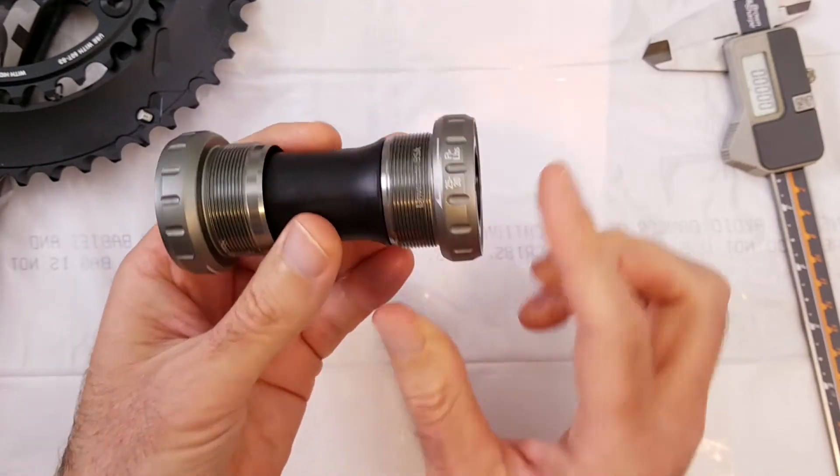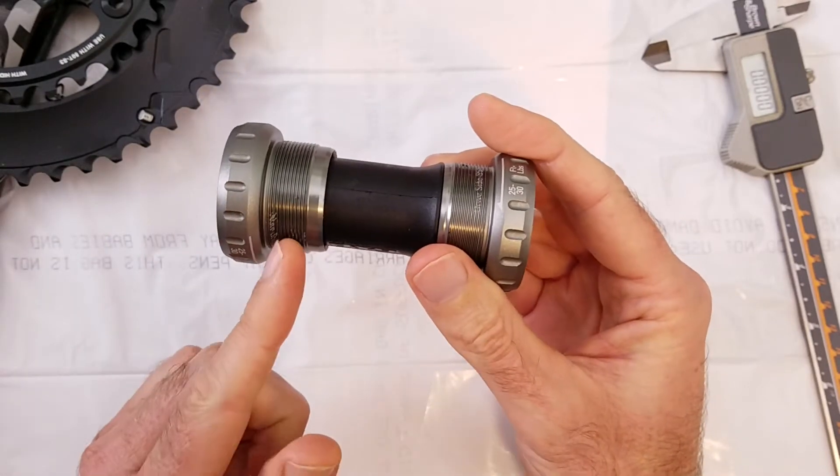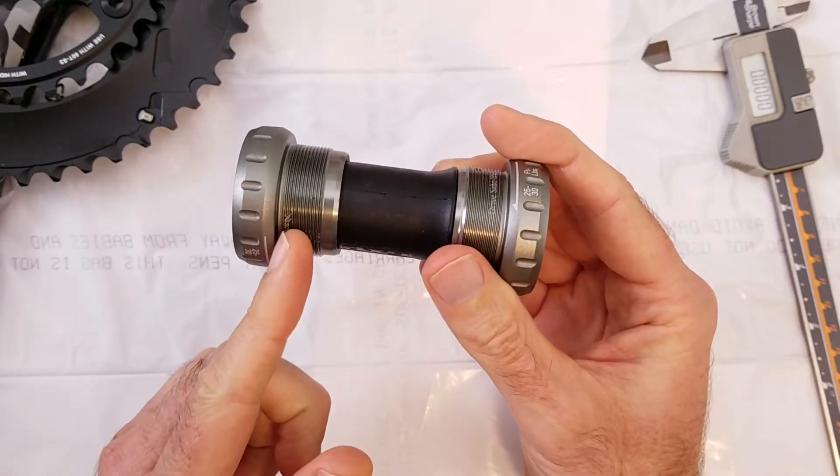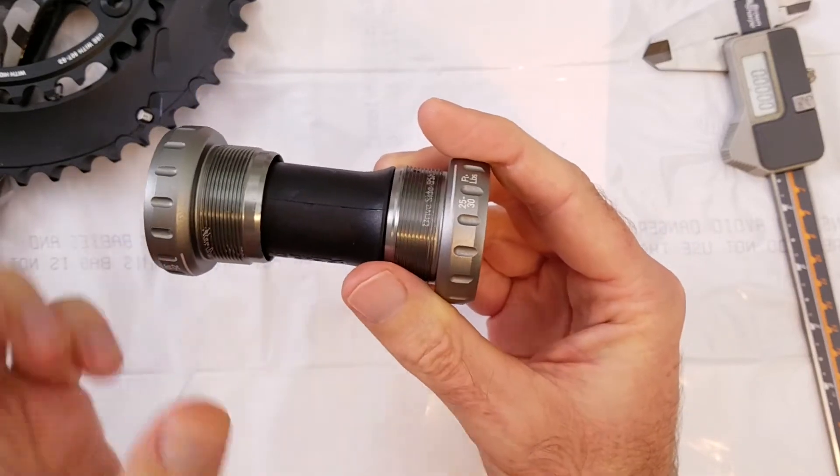The drive side is left hand threaded and the non-drive side is right hand threaded. So this is normal thread, this is reverse thread.